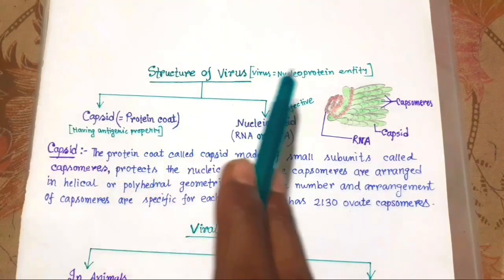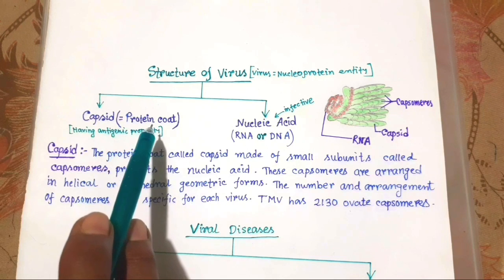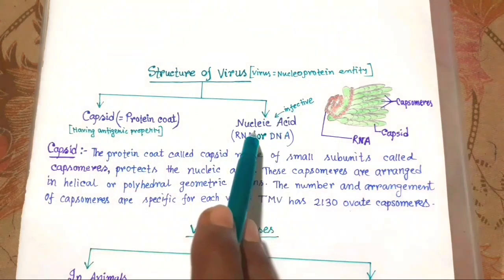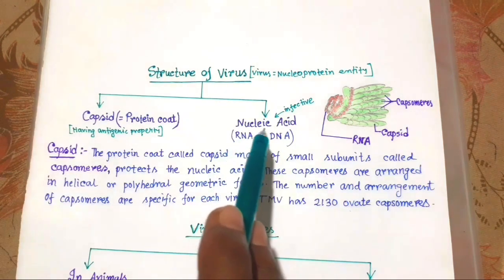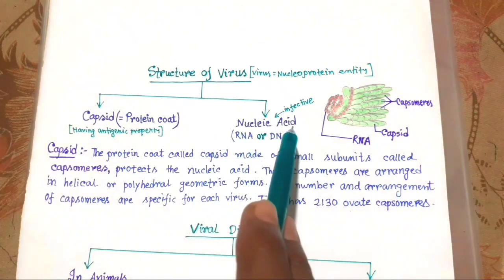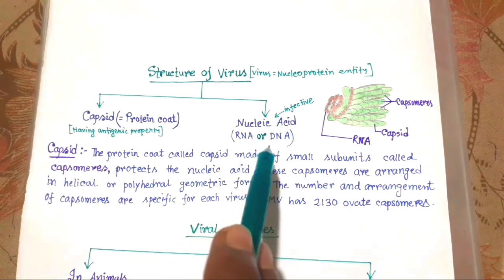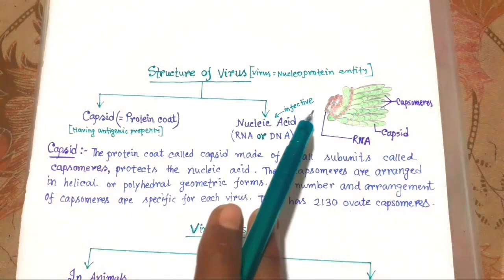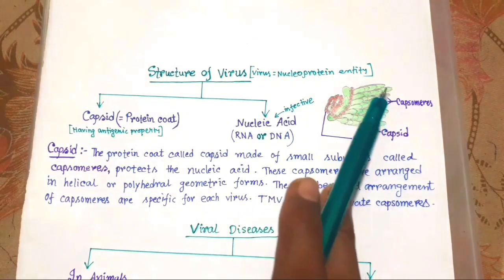We are discussing the structure of a virus. A virus consists of two parts: capsid, that is the protein coat, and nucleic acid. The protein coat (capsid) has antigenic properties, and the nucleic acid is the infective part. Either RNA or DNA will be present as nucleic acid — never both. This is the structure of TMV (Tobacco Mosaic Virus), where this is the nucleic acid RNA and this is the capsid, the protein coat.